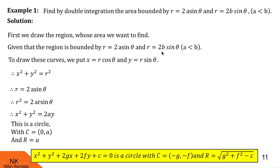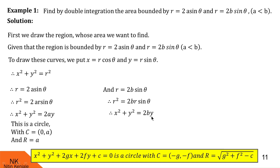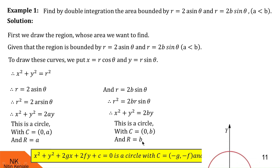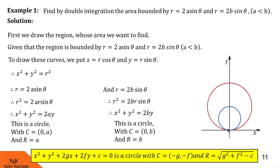Now consider the equation r = 2b sinθ. Multiplying throughout by r, we get r² = 2br sinθ. Replacing r² by x² + y² and r sinθ by y, we get x² + y² = 2by. Comparing with the standard equation of a circle, this is a circle centered at (0, b) with radius b. Now let us draw these two circles. The inside circle is r = 2a sinθ and the outside circle is r = 2b sinθ. The region bounded by these two circles is the shaded part.